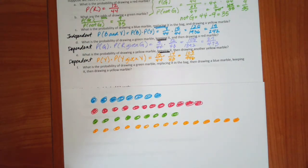Okay. What is the probability of drawing a green marble, replacing it, then drawing a blue marble, keeping it, and then drawing a yellow? Okay, so we've got three events here.